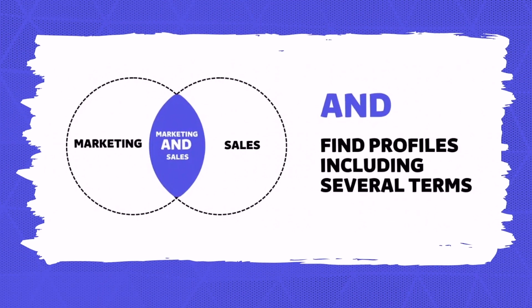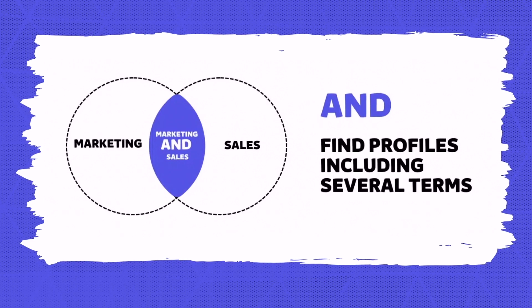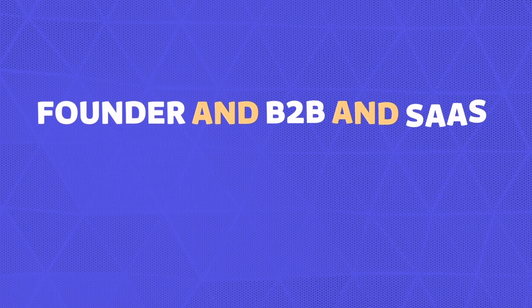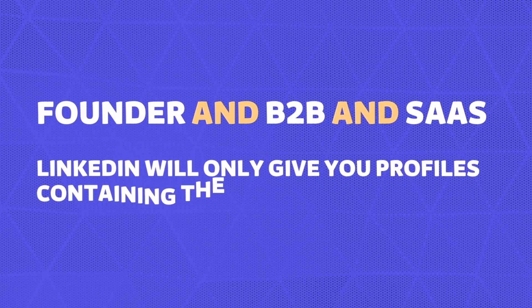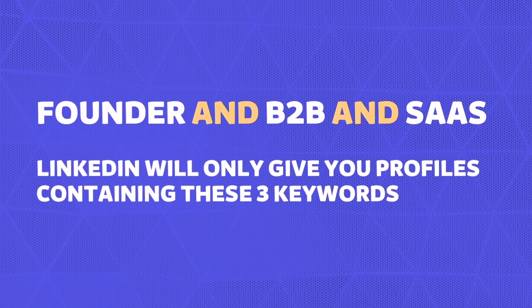If you use AND between two keywords, you will have in your search results all the people that have both keywords on their profiles or job titles. For example, 'e-commerce AND logistic' to find people working in logistics in the e-commerce field, or 'coach AND fitness', or decision makers in a specific field like 'founder AND B2B AND SaaS'. Only profiles with all three keywords — founder, B2B, and SaaS — will appear in the search results.